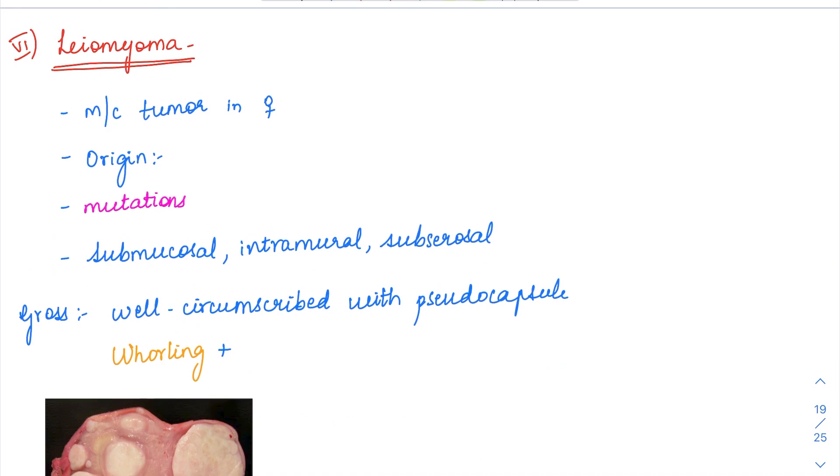Next we will see about leiomyoma. Leiomyoma is a benign tumor originating from the smooth muscles of the uterus. In the myometrium you have smooth muscles, and from there this leiomyoma arises. It is the most common tumor in females.